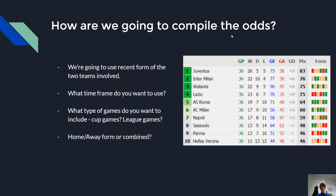So how are we going to compile the odds? We're going to use the recent form of the two teams involved. The key things we need to look at are what time frame we're going to use — we're going to use the last four games, home and away. You could change that, and you also need to consider whether you're going to include cup games. For us we're just going to include league form only, so we're going to take the last four results for each of the two teams in the league.